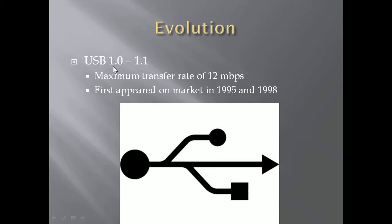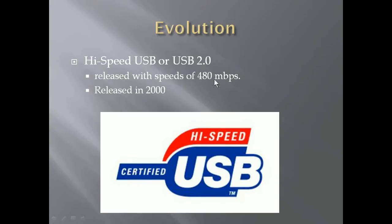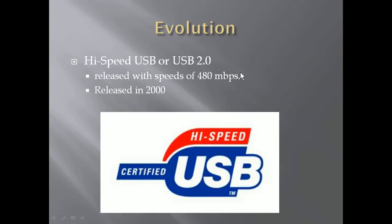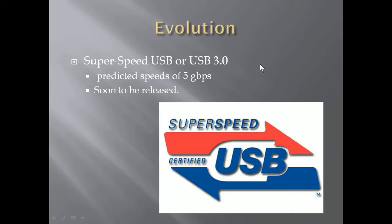USB started with version 1.0 and 1.1, with a maximum transfer rate of 12 Mbps, first appearing on the market in 1995 and 1998 — at that time 12 Mbps was quite sufficient. Then came High Speed USB or USB 2.0, giving speeds of 480 Mbps, a multiple-fold increase, released in 2000. Then came USB 3.0 with a speed of 5 Gbps.